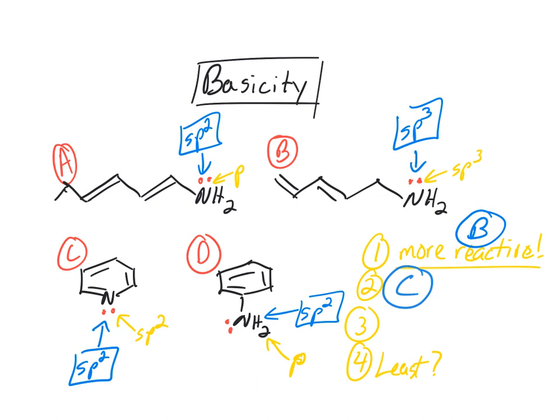So A and B have the equal number of resonance structures. I'm sorry, A and D. So A has three pi bonds to work with resonance structures. D has three pi bonds to work with resonance structures. Now, which one's most reactive? A. Still A.